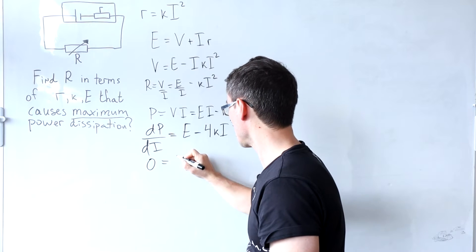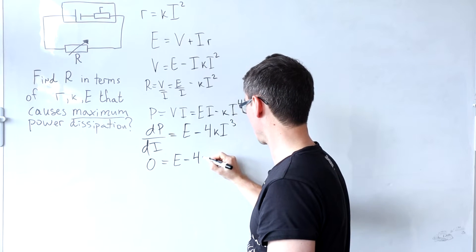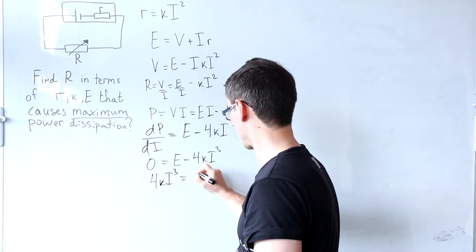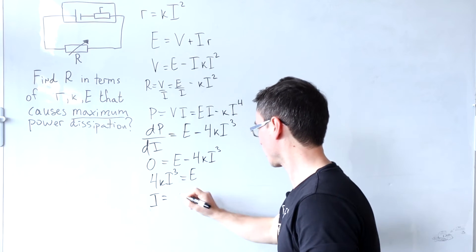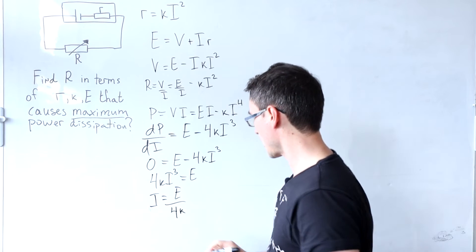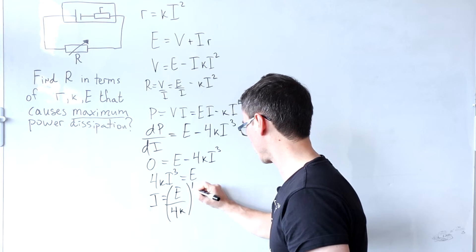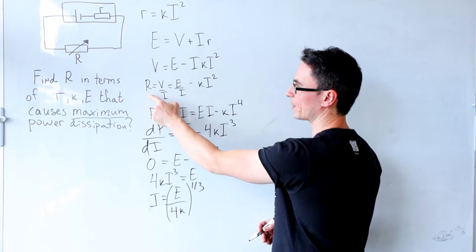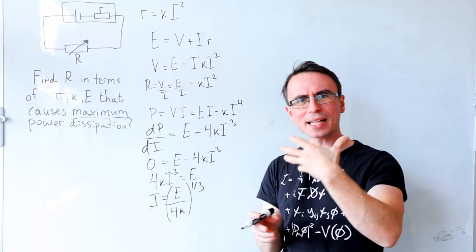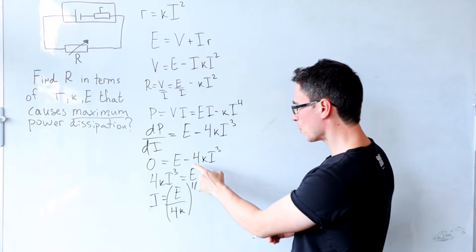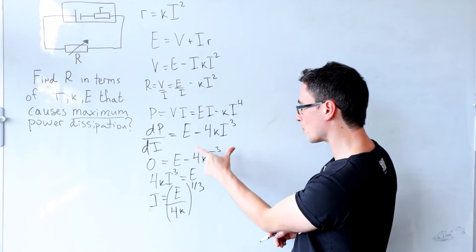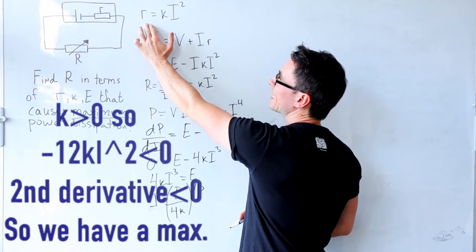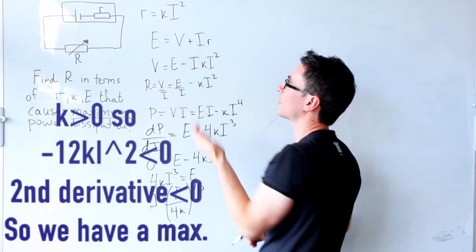Setting E minus 4K times I cubed equal to zero, this means that 4K I cubed equals E, meaning that I will be given by the cube root of E divided by 4K. This current will correspond to a direct value for the resistance. To confirm we have a maximum rather than a minimum, the second derivative of power with respect to I is minus 12K I squared. K must be positive because the internal resistance must be positive, and I squared is positive by definition.